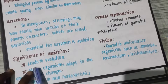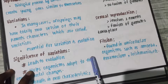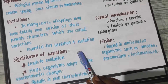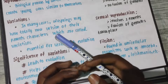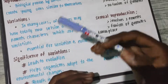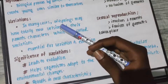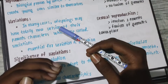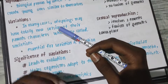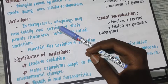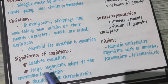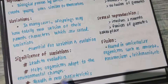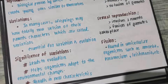The first significance of variation is that it leads to evolution. The variation is important for evolution — the organism will evolve, similar to how human beings have evolved. It also helps the organism adapt to environmental changes.